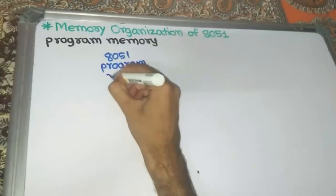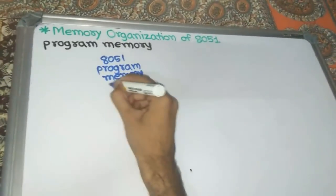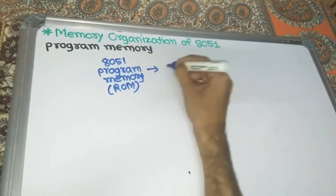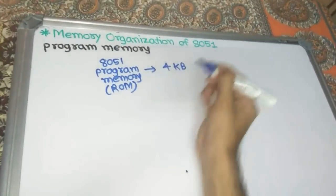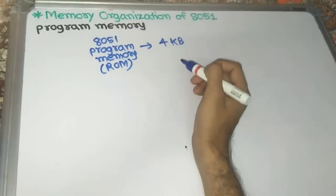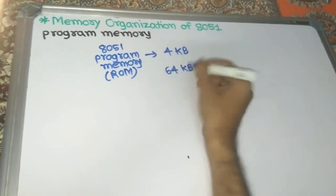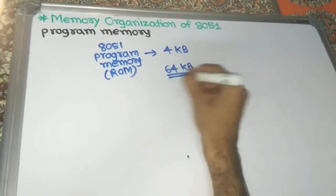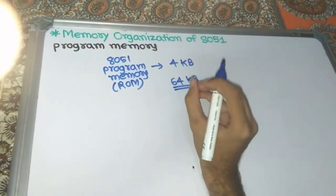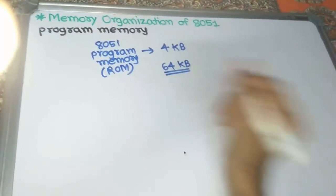The 8051 has 4KB of program memory, which is internal ROM. If you want to connect to external ROM, you can expand it to 64KB. So 8051 has 4KB internal ROM and can be expanded up to 64KB.